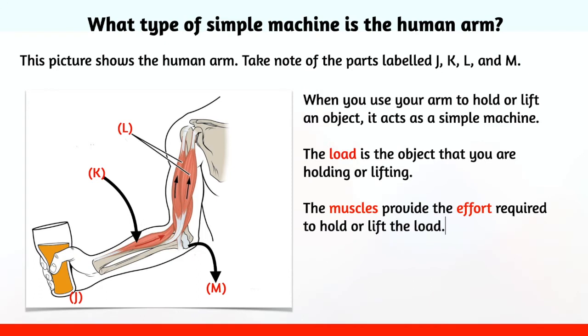The muscles provide the effort required to hold or lift the load. The fulcrum or the pivot is at the elbow.